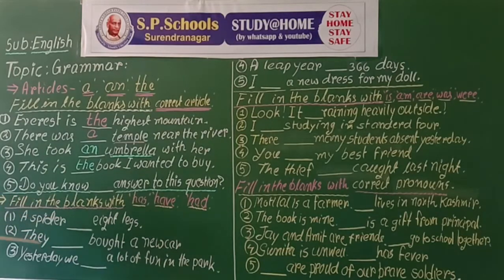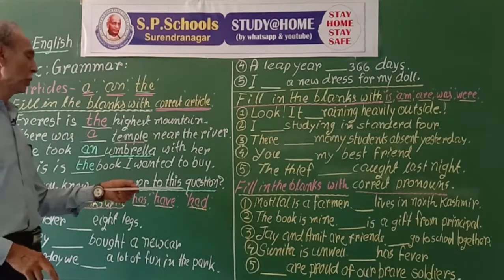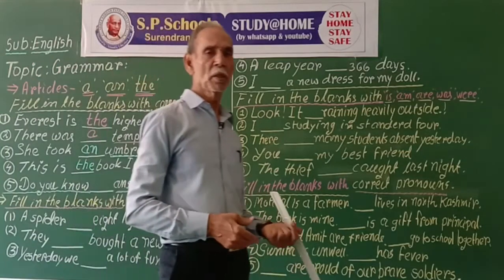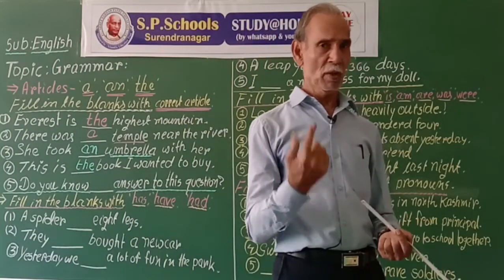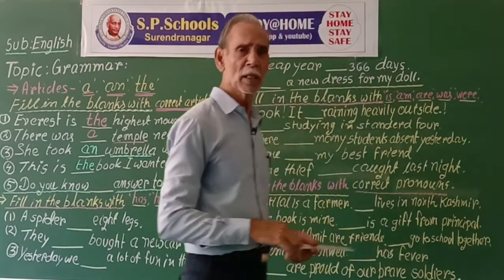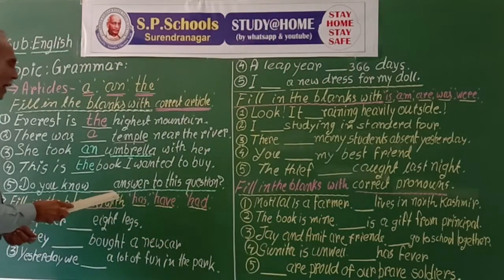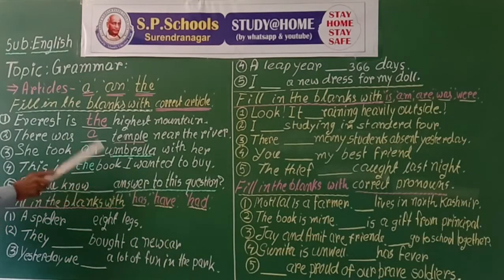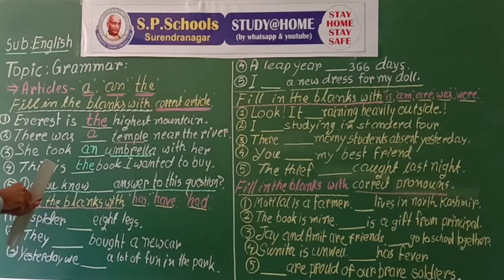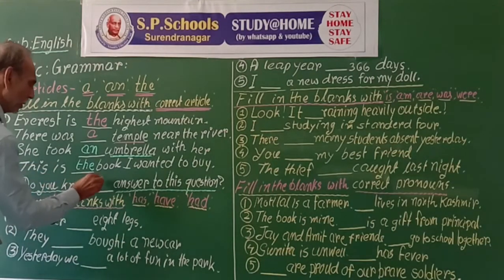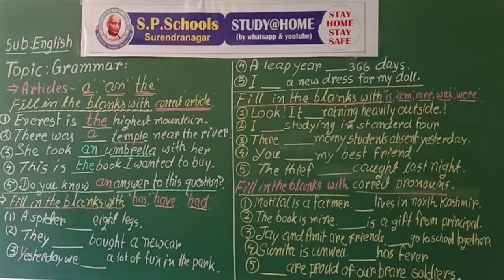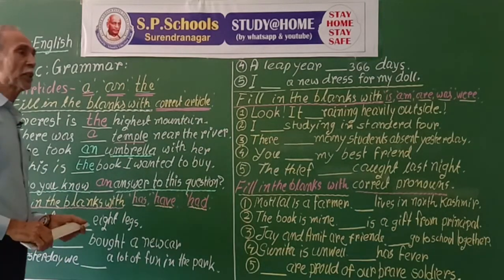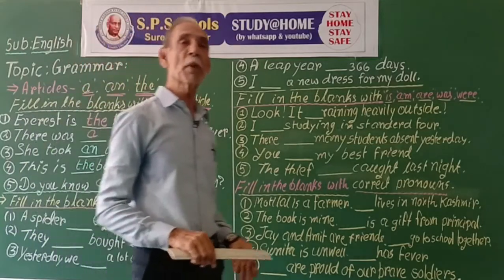Do you know blank answer to this question? Answer is a common noun beginning with a vowel sound. So we use article 'an': Do you know an answer to this question? Thus we use articles before common nouns.